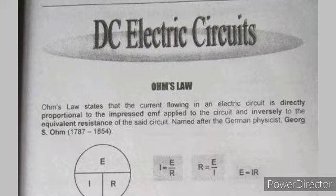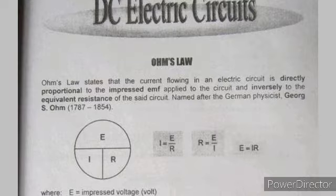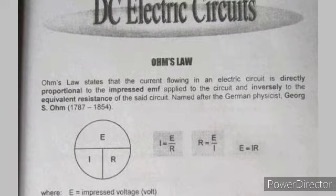What does Ohm's Law mean? We have a formula here with a circle — E, I, and R. E is voltage, I is current, R is resistance. By definition, current is directly proportional to voltage — the impressed EMF. Electromotive force is what EMF stands for.